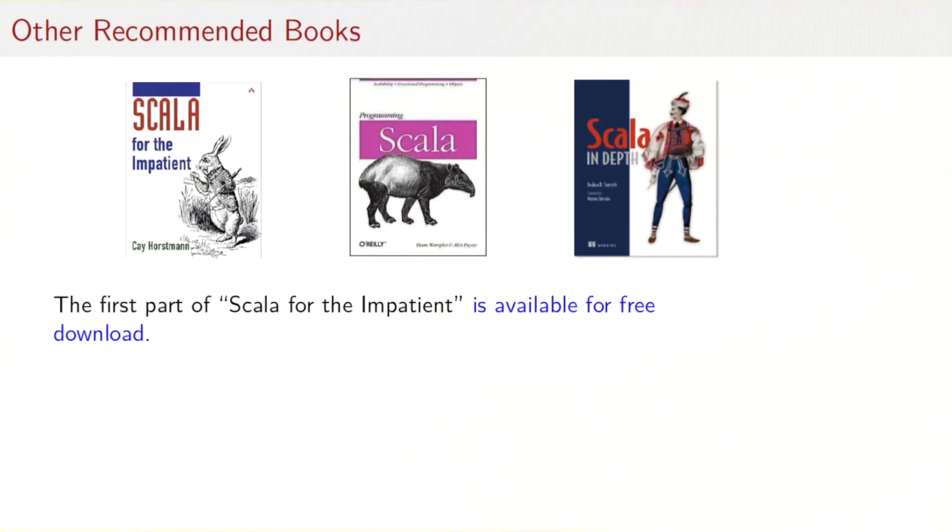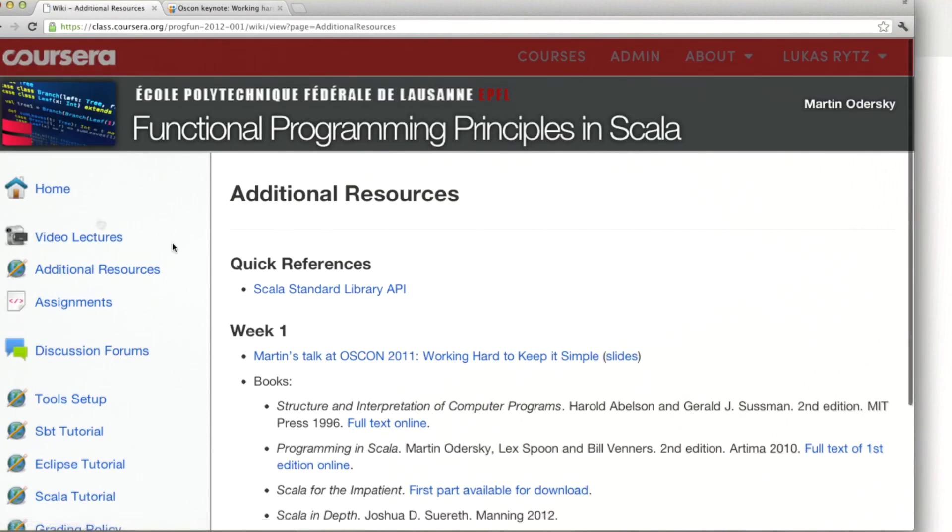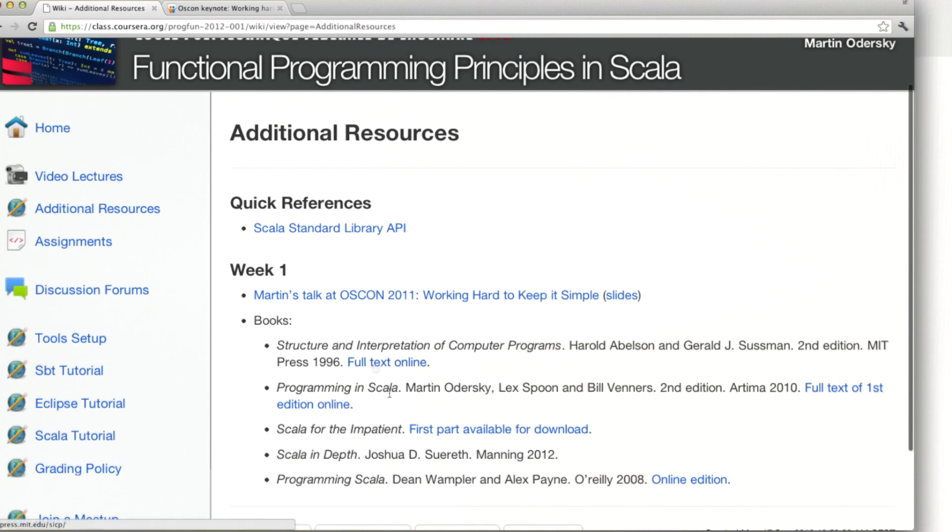There are many other books published about functional programming in general, and Scala in particular. I only pick out three to recommend, but there would be many other choices as well. First recommendation is Scala for the Impatient by Cay Horstmann. That gives a fast-paced introduction for people who already know Java well. The second one is the O'Reilly Book Programming Scala. And the third one is called Scala in Depth by Josh Suereth. As the name implies that book goes quite a bit further than the other introductory texts. You can find links to all of these books on the course site. If I open up the course site and go to additional resources, then I see the links for all the books here. Quite a few of them are actually available online either as the full text or in parts.